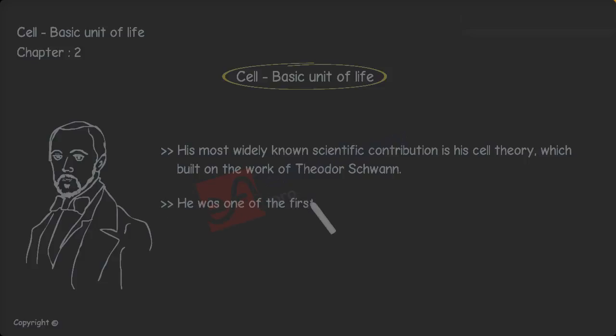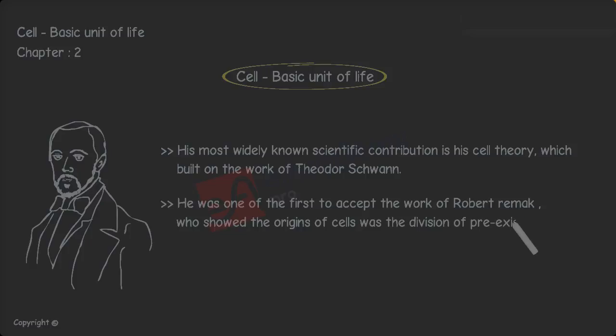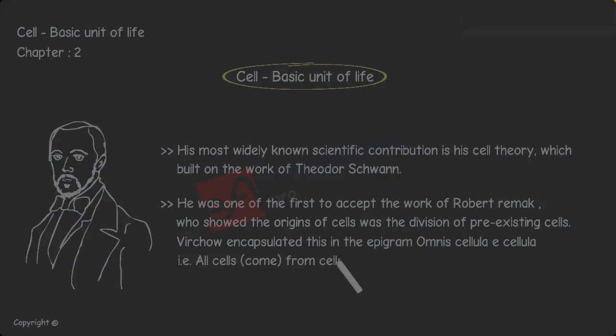He was one of the first to accept the work of Robert Remak, who showed the origins of cells was the division of pre-existing cells. Virchow encapsulated this in the epigram Omnis cellula e cellula, i.e., all cells come from cells, which he published in 1855.